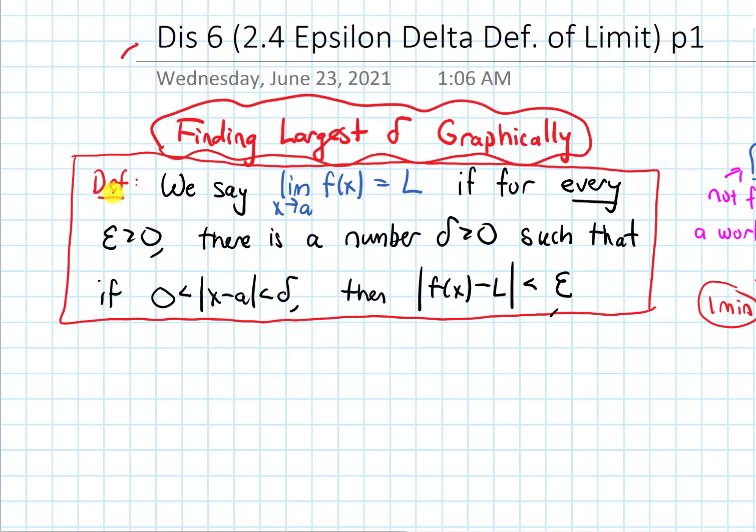So in this video, we'll do examples where we find the largest value of delta graphically. So recall first the epsilon-delta definition, which says that we say the limit as x approaches a of f(x) equals L if for every epsilon greater than 0, there is a number delta greater than 0, such that if 0 is less than the absolute value of x minus a is less than delta, then the absolute value of f(x) minus L is less than epsilon.